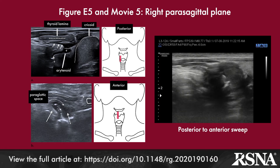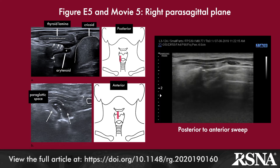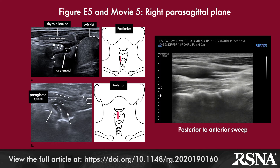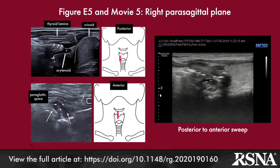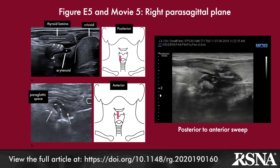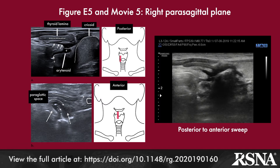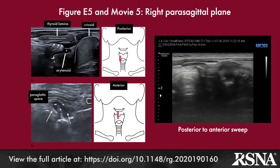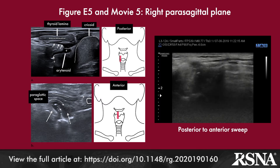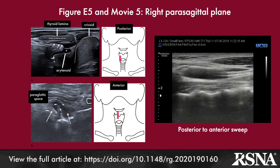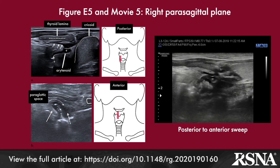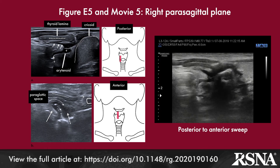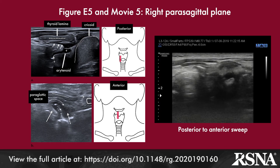An important anatomic landmark is the paraglottic space that extends between the ventricle and overlying thyroid lamina, which is a submucosal route for subglottic extension of glottic tumors, and is not visible at endoscopy.